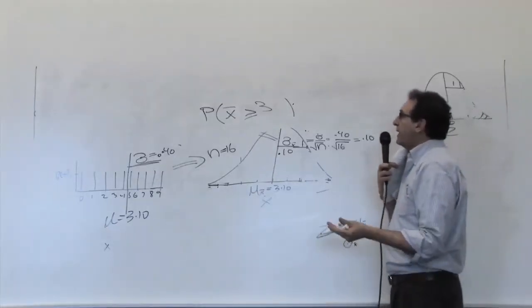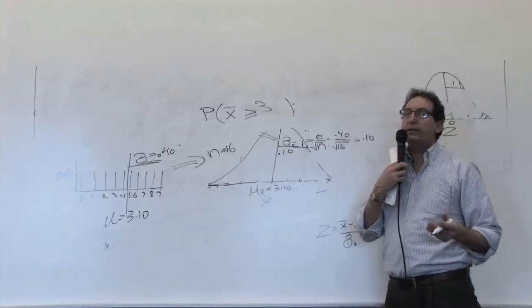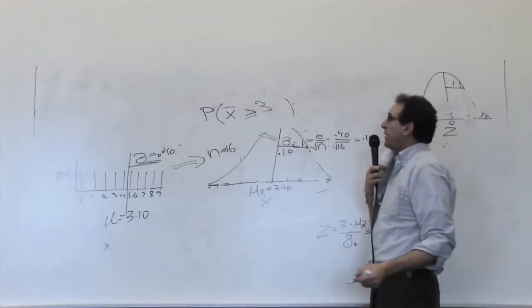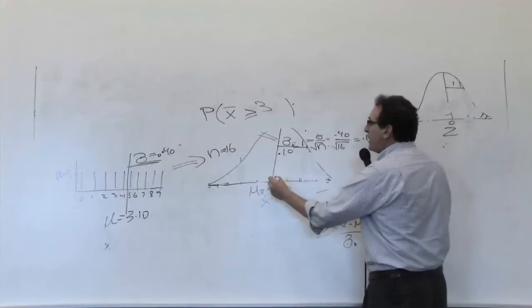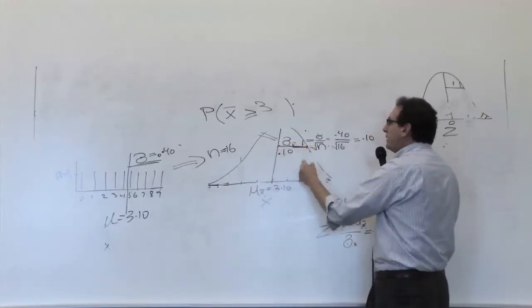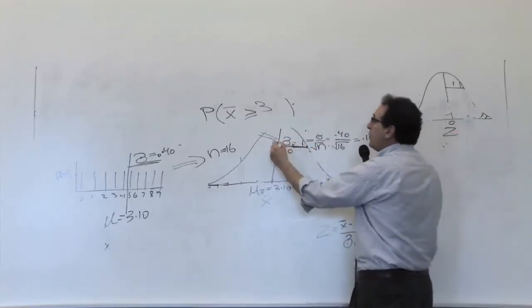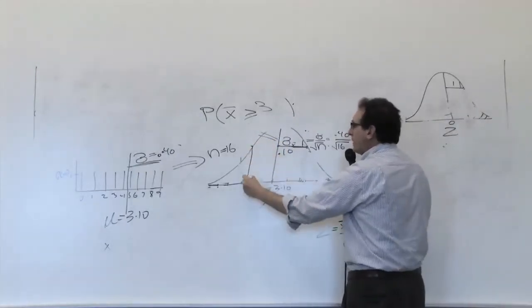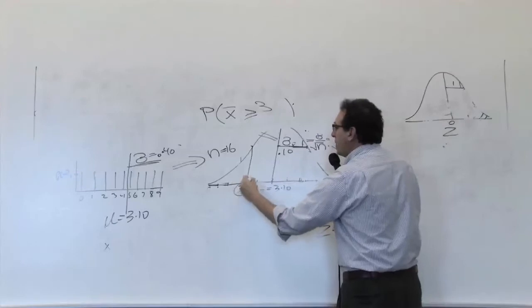And finally, the next thing, if you're going to do this very systematically, is to locate the question itself on the picture, which will help us get the answer. Where is 3? Well, this is 3.10. If you go 0.10 in the other direction, it's at 3.20. If you go 0.10 to the left, 3.10 minus 0.10 is right over here. So 3.0 is right over here.